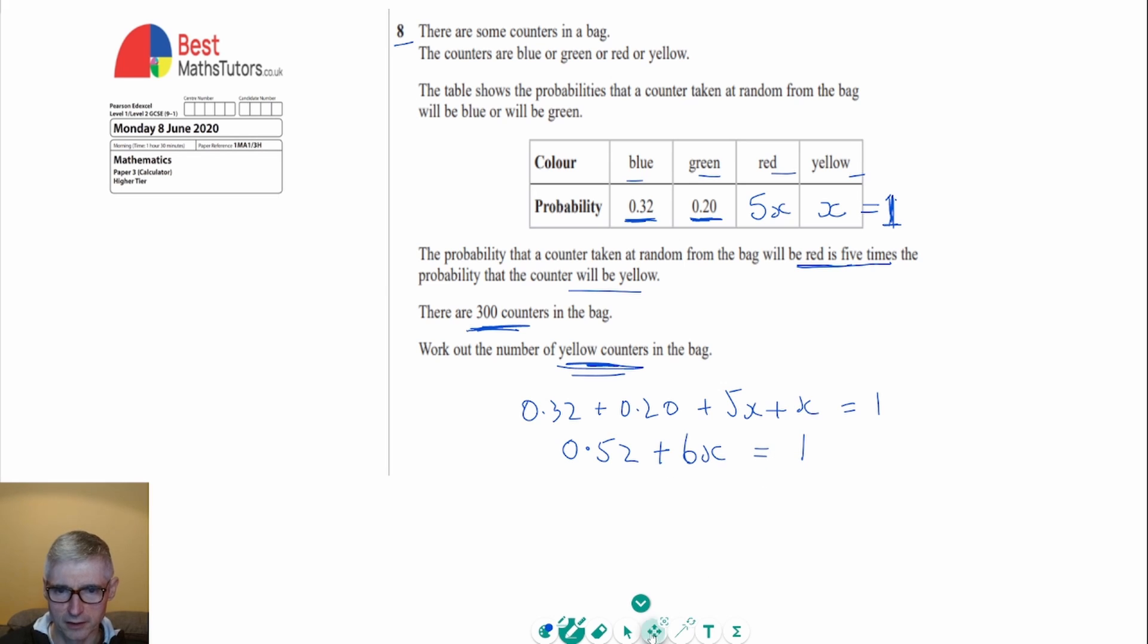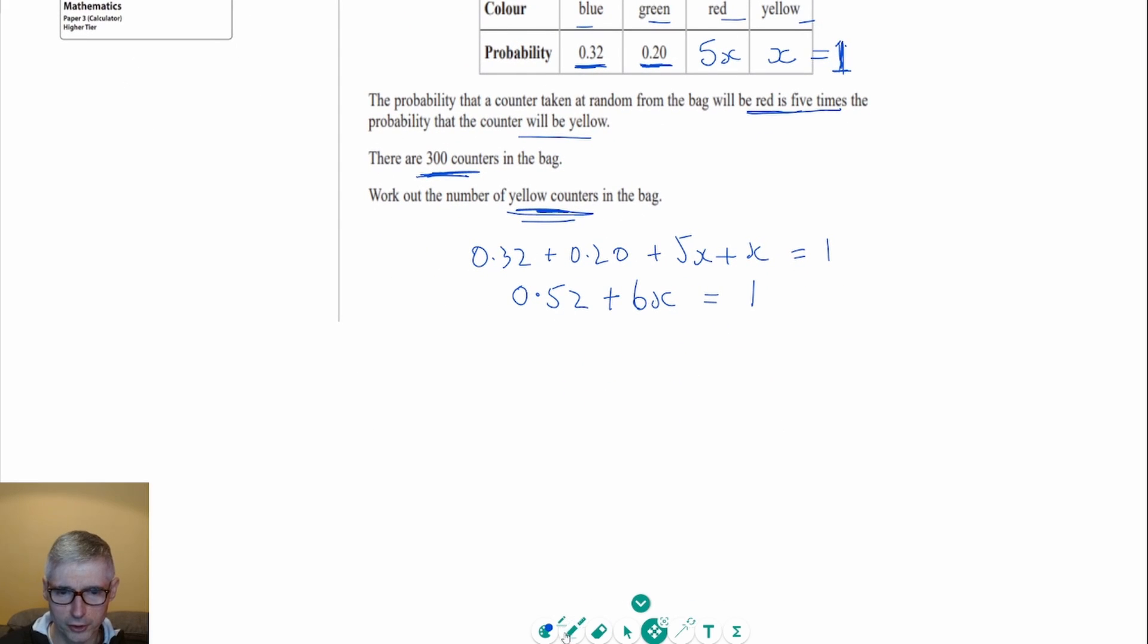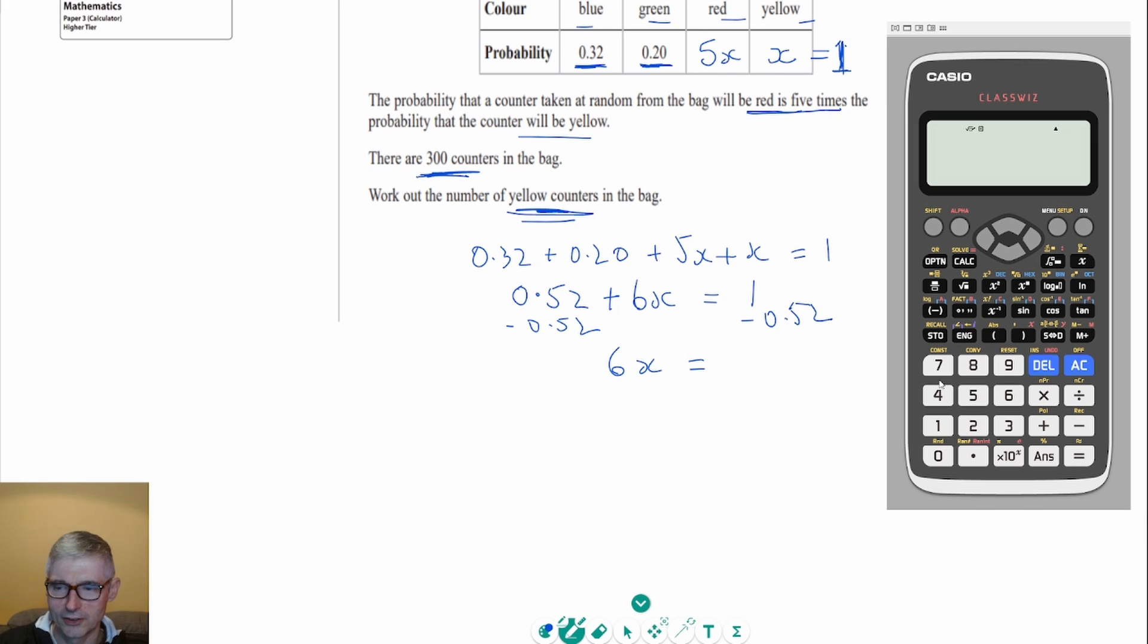So by solving, I mean working out the value for x. So now what I'm going to do is I'm going to take away 0.52 from both sides. And then I'll be left with 6x equals, now because we're on the calculator paper, we'd find this quite easy to do without a calculator, but we might as well just use the calculator for that.